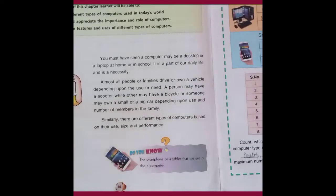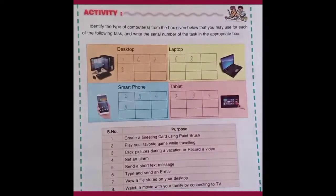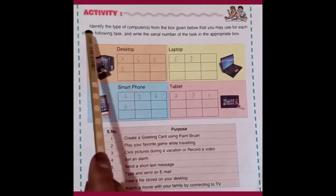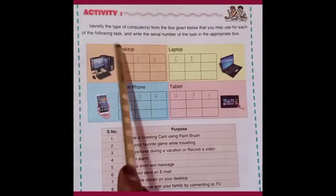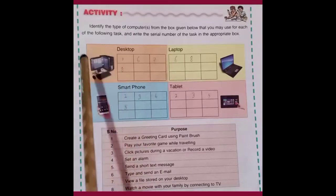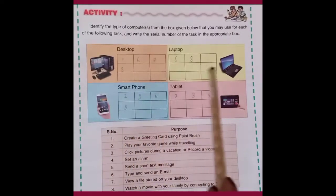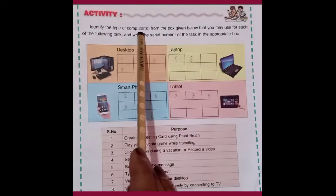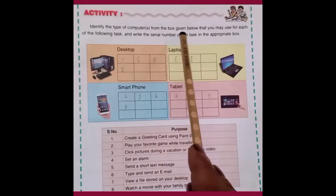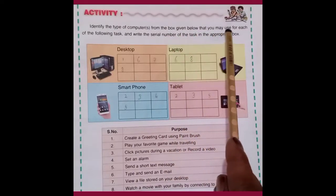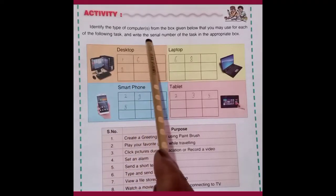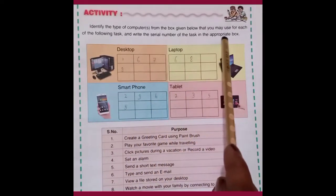Go to the next activity. My dear children, here is one activity just for checking your pre-knowledge about the types of computers. Identify the types of computers from the box given below that you may use for each of the following tasks, and write the serial number of the task in the computer box.